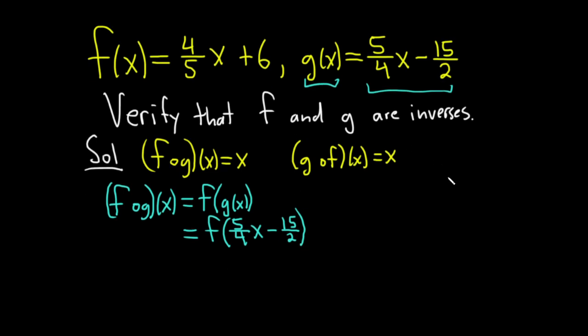Alright, and then all you do is plug this into f. So this whole thing here is your x. So this is equal to... So replacing x with all of this, all of this is your x. So 4 fifths. And then we have 5 fourths x minus 15 halves.